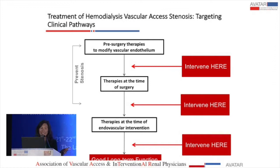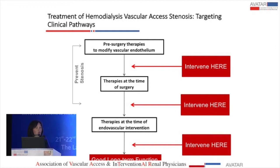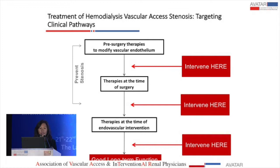This is not going to help us. What we have left is really our vascular access team and our clinical pathway. We see patients at least three times before surgery, at the time of surgery, and if the patient develops a problem after surgery. So we can have therapeutics before surgery to modify the endothelium, therapies at the time of surgery, and hopefully these will prevent stenosis. If stenosis does occur, we can have therapies at the time of endovascular intervention, and with all of these interventions, hopefully we can have good long-term function.